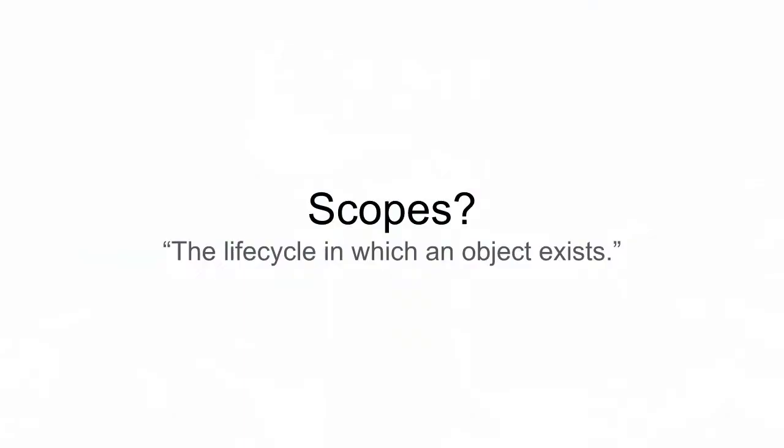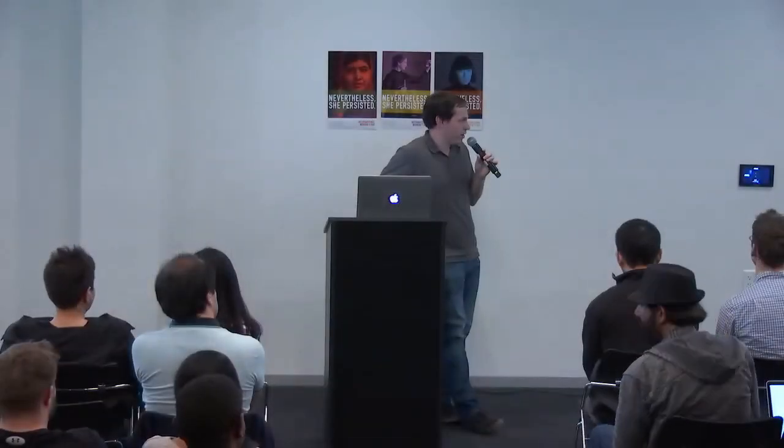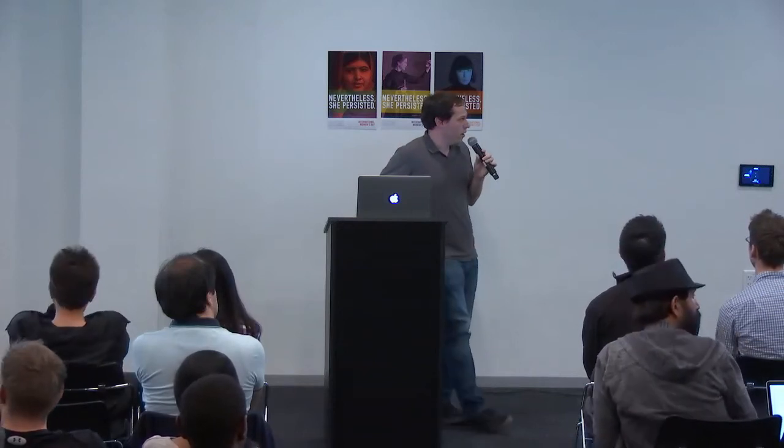So, scopes — what are scopes and why are they important? For the sake of this talk, I'll define a scope as the lifecycle in which an object exists. Maybe some examples: we have a logged-in scope, so an object in the logged-in scope is created when you log in and garbage collected when you log out. Or maybe we have a map scope — objects exist with the map and are torn down when the map is torn down. If anyone has worked in a mobile app, you've probably worked with the biggest scope: the app scope. You've probably added some kind of app singleton — on iOS via the UI application delegate, on Android via the application object.